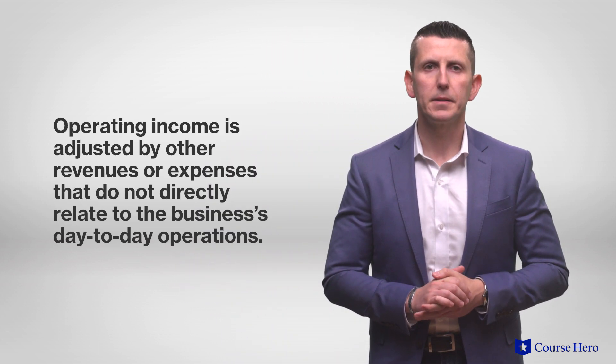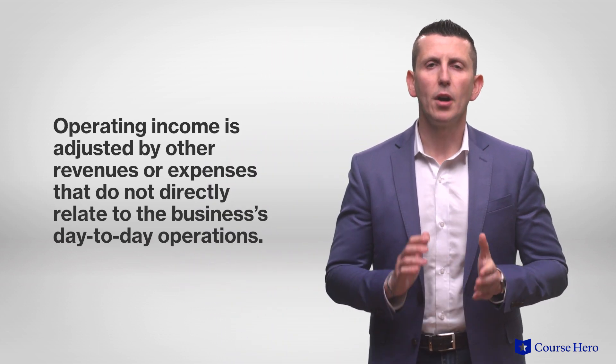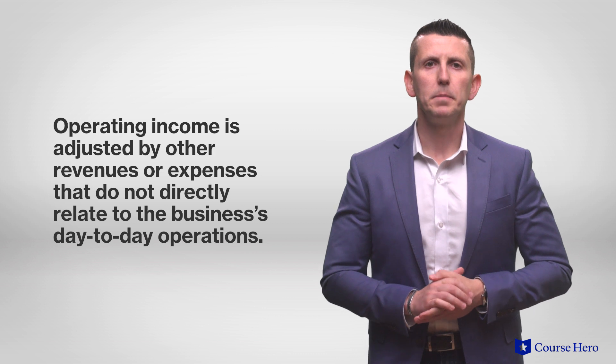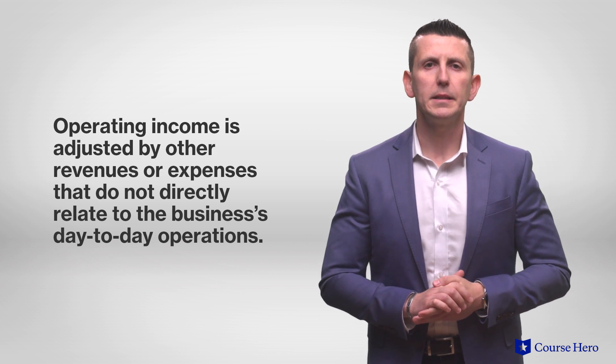The final step in a multiple step income statement is net income. Operating income is adjusted by other non-operating revenues or expenses that do not directly relate to the business's day-to-day operations. Examples include interest expense or interest income, taxes, losses from lawsuits, or gains and losses from the sale of investments.